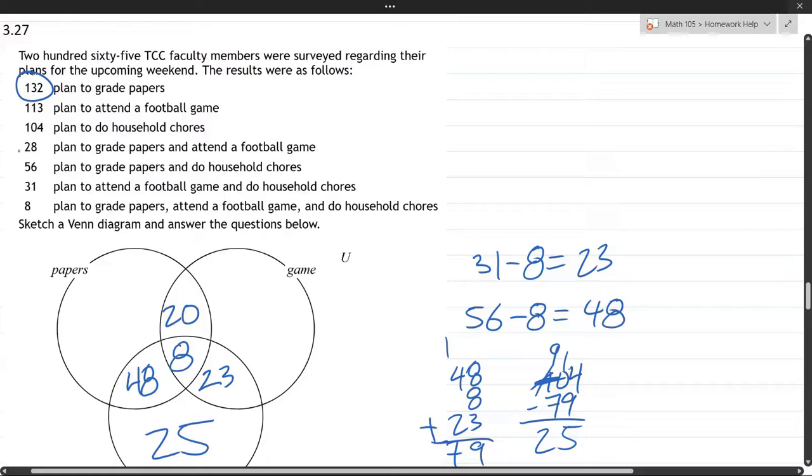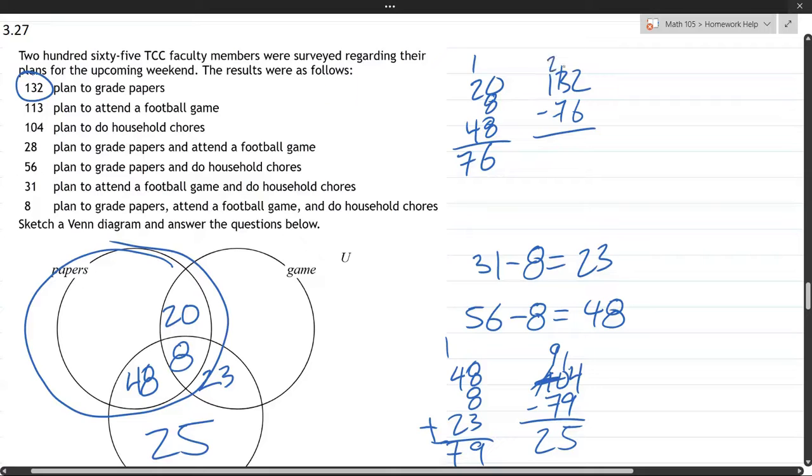Now we have 132 for papers total. So in this circle right here, we have 132. But we've already done 28 and 48. 8 and 8 is 16, 3, 4, 76. So I've already got 76. And I have 132 total. I've got to borrow again. It's 2. 12 minus 6 is 6. 12 minus 7 is something else. It's a 5. 56. Getting there.